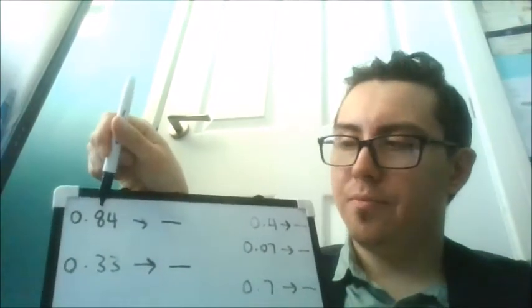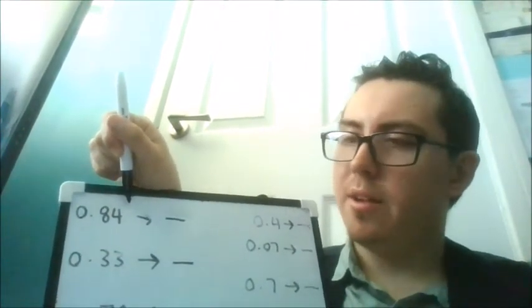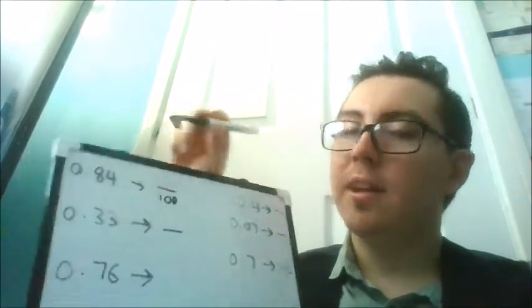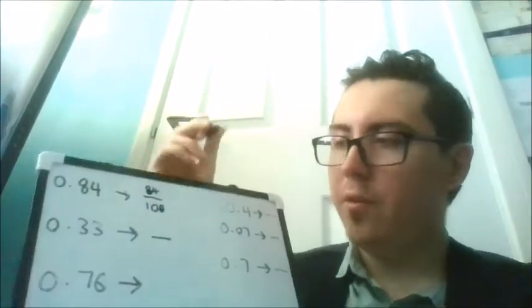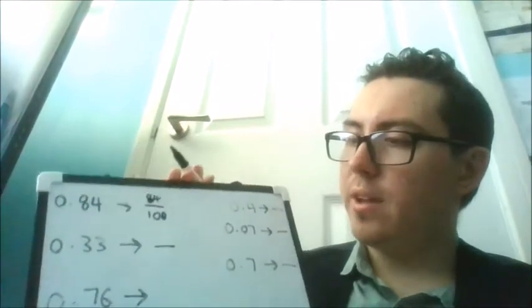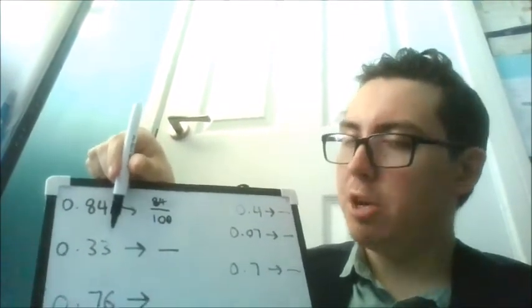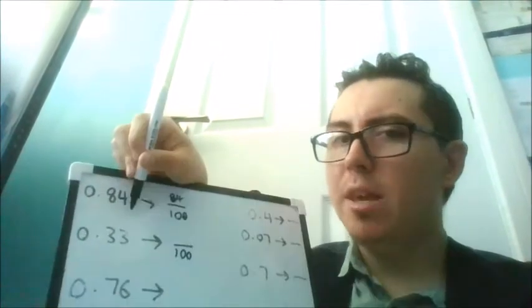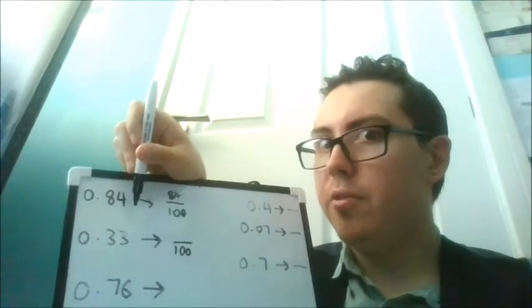0.84. So we have the tenths and hundredths column here. If we have a hundredths column that means we're going to be over 100. How many over 100? We have 84. 84 over 100. What do we have here? So we have the tenths and the hundredths column, so it's going to be over 100. How many over 100 would it be? We have 33.